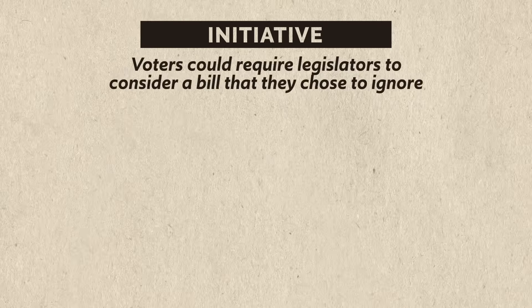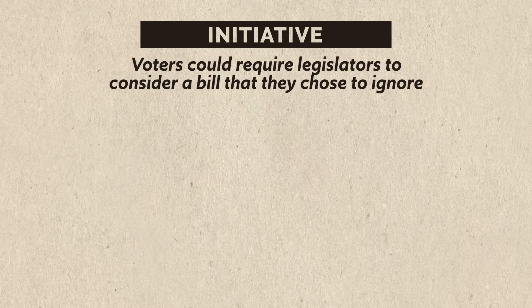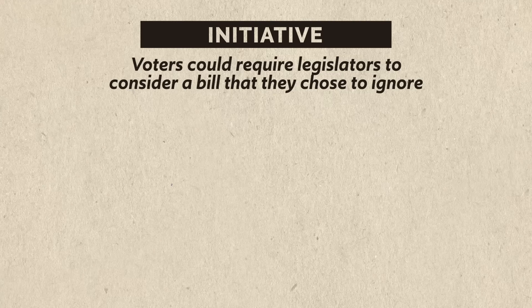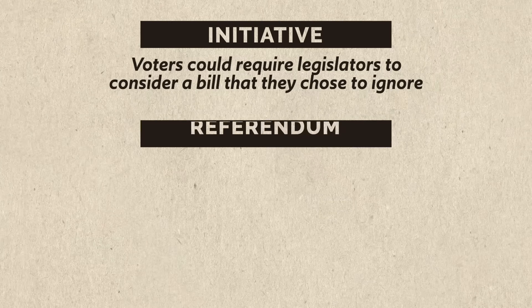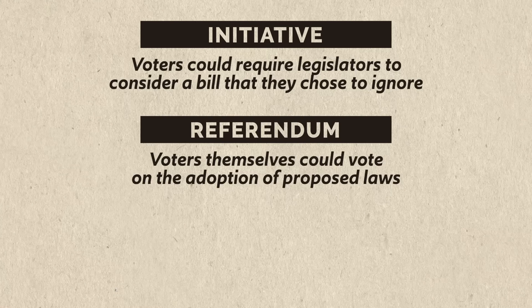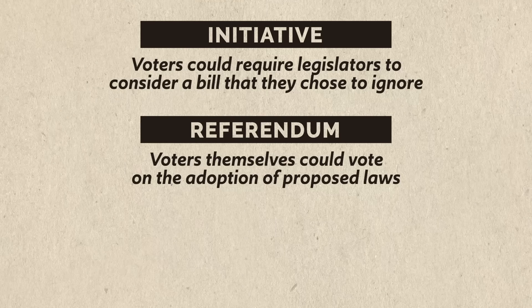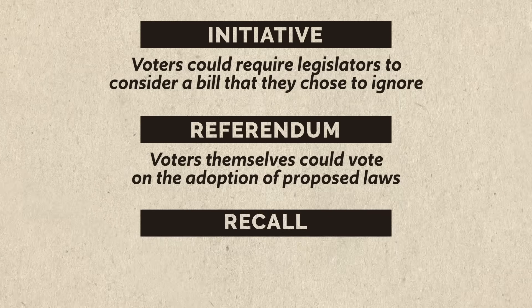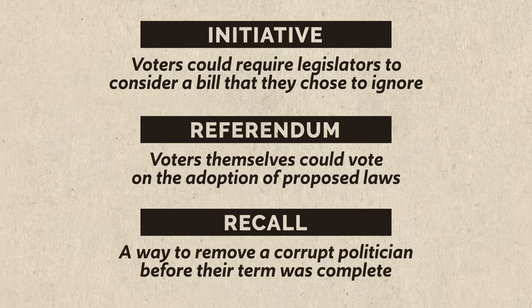Another way progressives fought to expand democracy was through legislative reforms: the initiative, the referendum, and the recall. These were answers to the problem that once a politician was elected, they could choose to ignore the will of the people. The initiative meant voters could require legislators to consider a bill they chose to ignore. The referendum meant voters themselves could vote on the adoption of proposed laws — many states enacted referenda on women's suffrage and the prohibition of alcohol. The recall was established as a way to remove corrupt politicians before their term was complete.